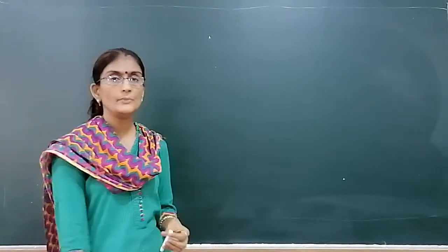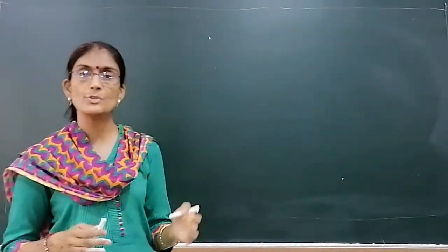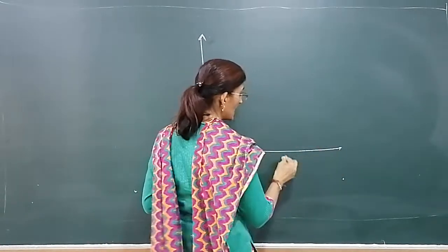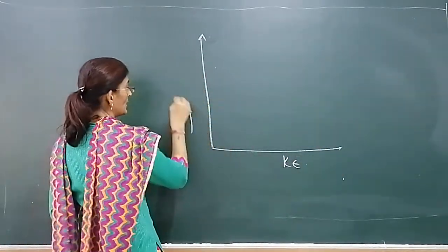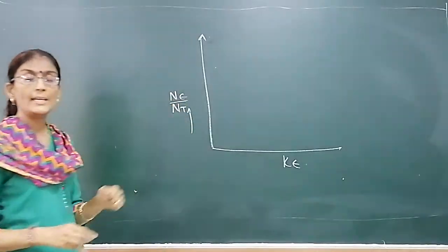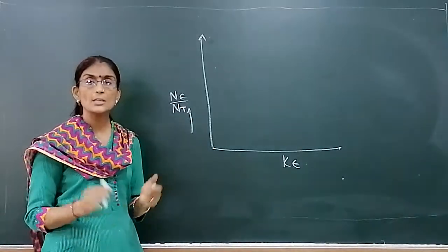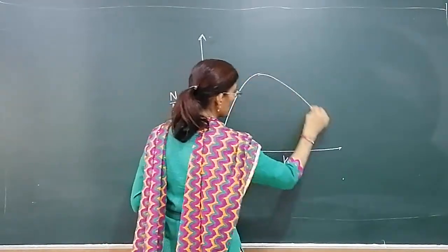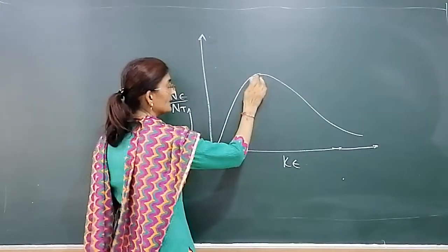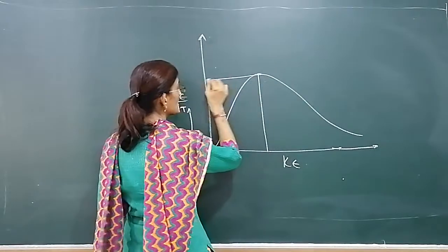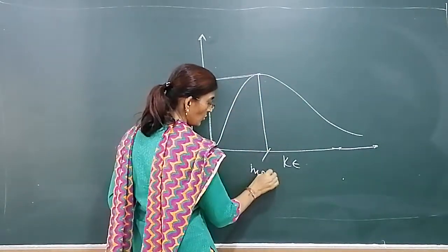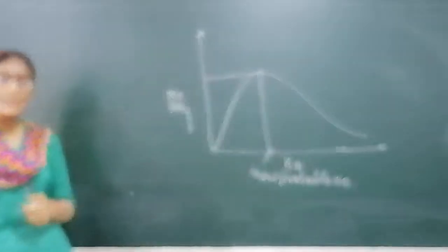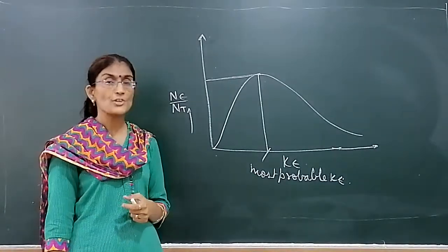Good morning students. In the last video we had done how the fraction of molecules having kinetic energy varies - the Boltzmann plot. Here we took kinetic energies of different molecules on one axis and fraction of molecules on the other. Ne is the molecules having activation energy and Nt is the total number of molecules. At a particular temperature this type of graph is observed, and this energy was the most probable kinetic energy - the energy possessed by the maximum fraction of molecules.